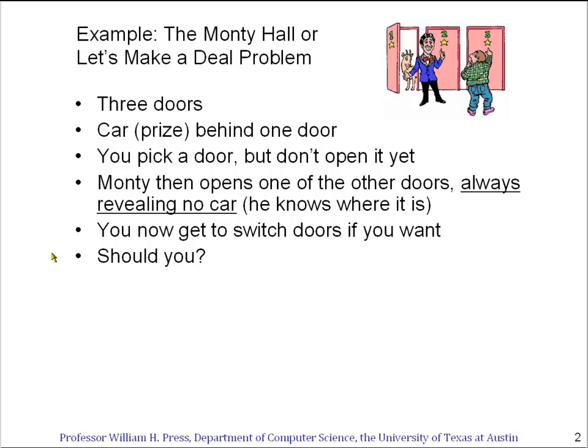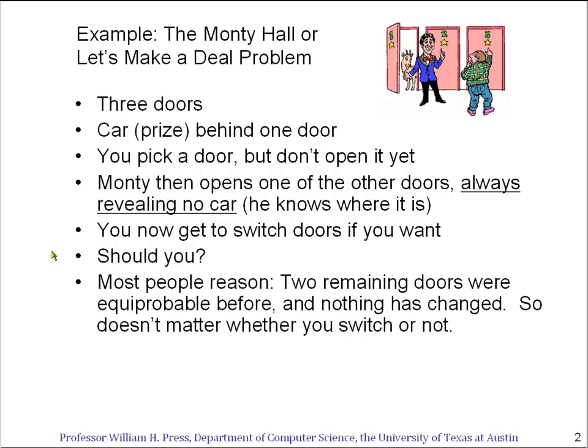This is an interesting question because most people reason in a very straightforward way. They say: at the beginning of the game, the car had an equal probability of being behind any of the three doors, but I've eliminated one of the doors — or rather, Monty has eliminated one of the doors by opening it.